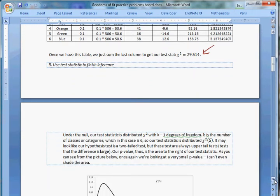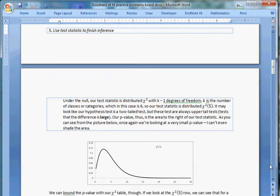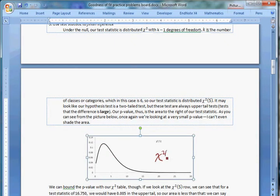Now under the null, our test statistic has a chi squared distribution with k minus 1 degrees of freedom. k is the number of categories. In this case, it's 6. We had 6 different colors. So our test statistic is going to be distributed chi squared with 5 degrees of freedom.